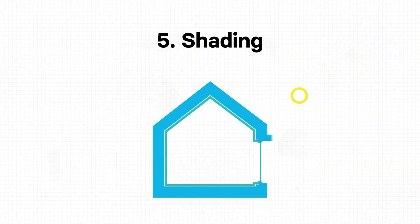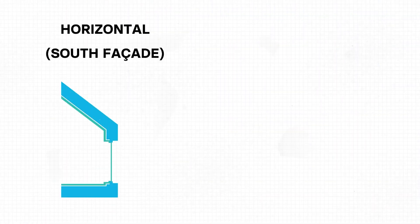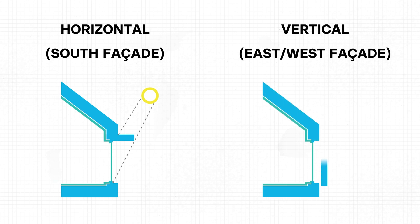However, solar gains could be disastrous in the summertime, and that's why we have the fifth principle: shading. The shading should be designed to let in the winter sun so we can utilize solar gains during winter, but to block the higher summer sun in order to minimize overheating. On the south facade — for the northern hemisphere — the shading should be horizontal because the sun is high there. On the east and west facades the shading should be vertical because the sun is very low at those points.